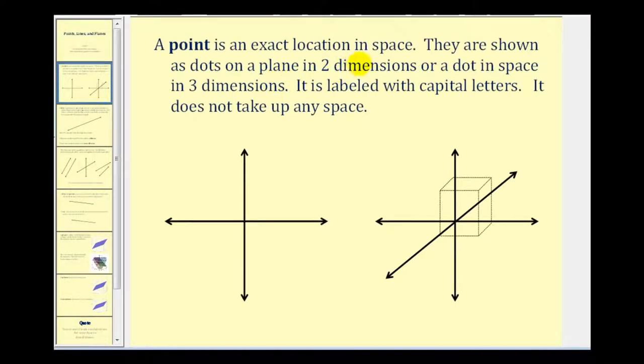A point is an exact location in space. They are shown as dots on a plane in two dimensions or a dot in space for three dimensions. They are labeled with capital letters to distinguish between different points. However, a point does not take up any space.